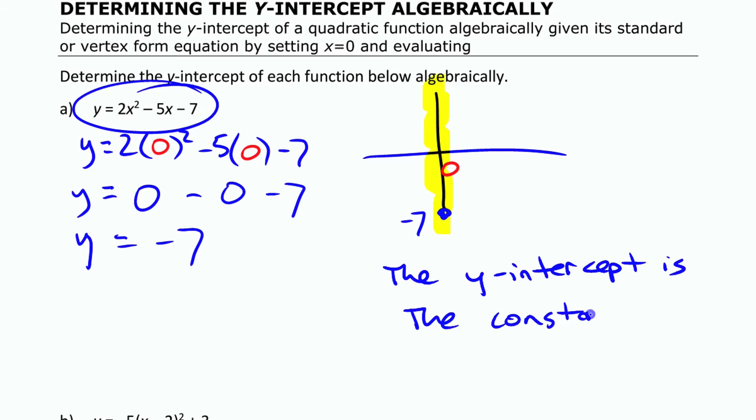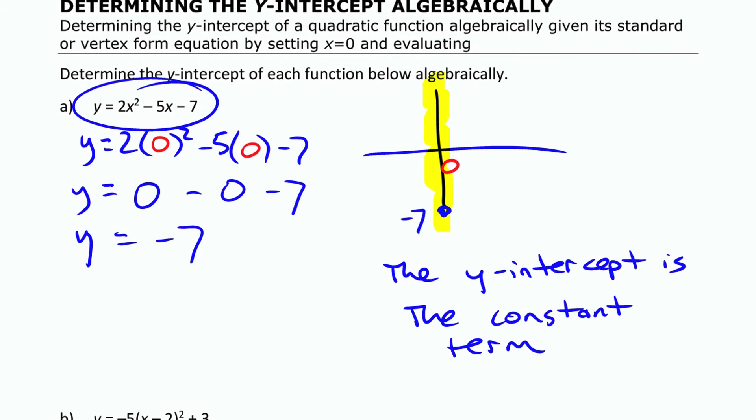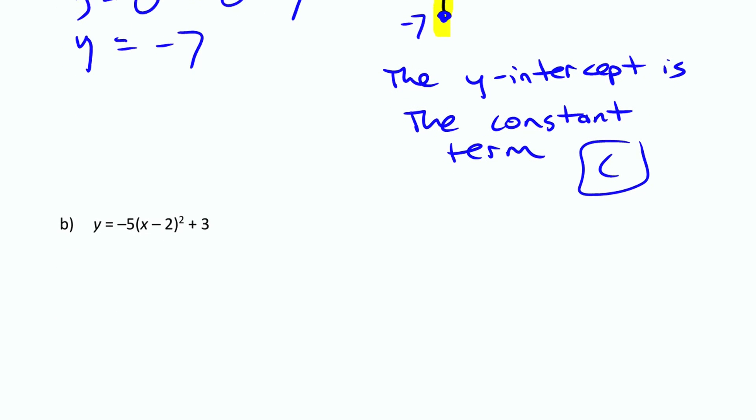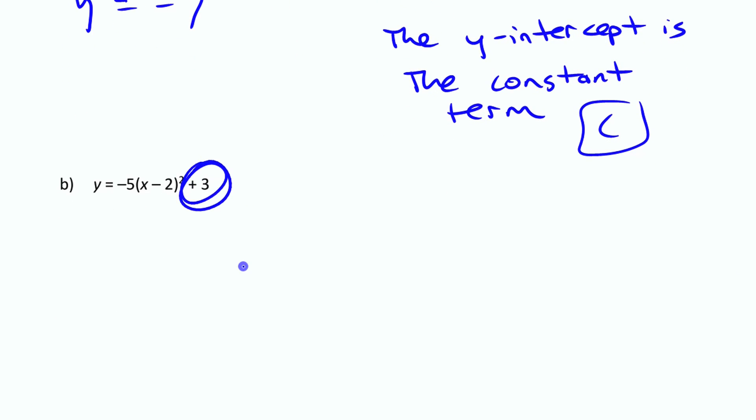Sometimes you refer to that value as c, the c value, if it's in standard form. Now, if it's in another form, like vertex form like this next one, it doesn't mean that this is the y-intercept. It has to be in standard form for that. We can still do the same thing here.